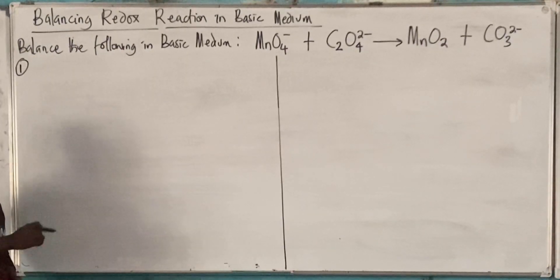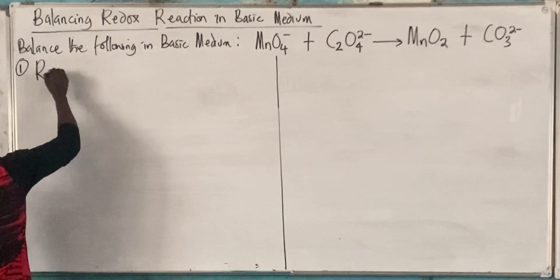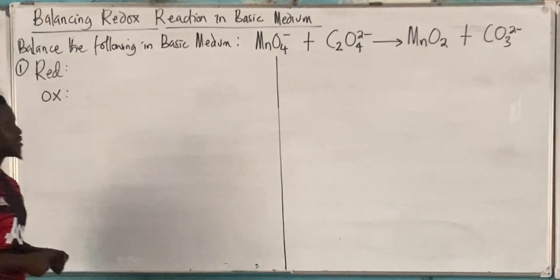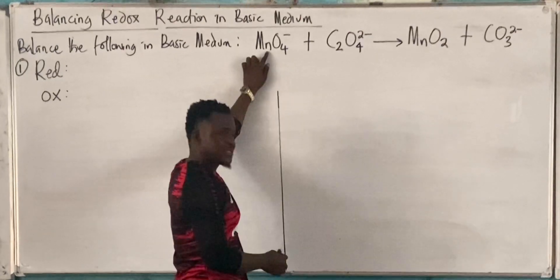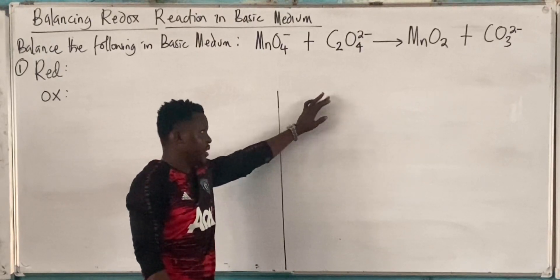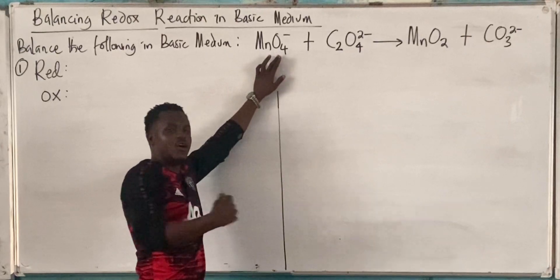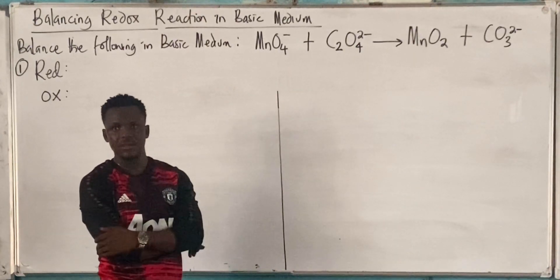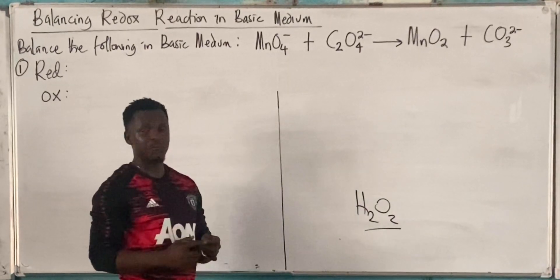Step one says split it into two half cells — reduction and oxidation. Now let's use our oxidation numbers. Here, manganese: oxygen is always minus two except in peroxide. One of these compounds looks like peroxide — this is actually the form of hydrogen peroxide.